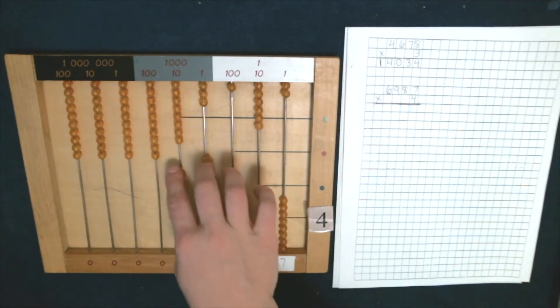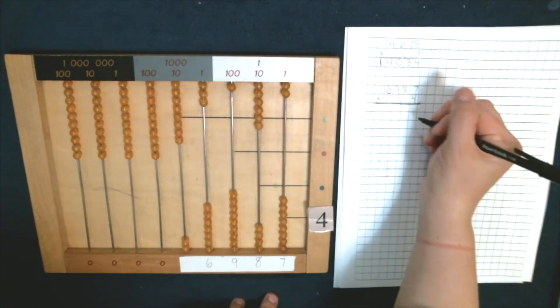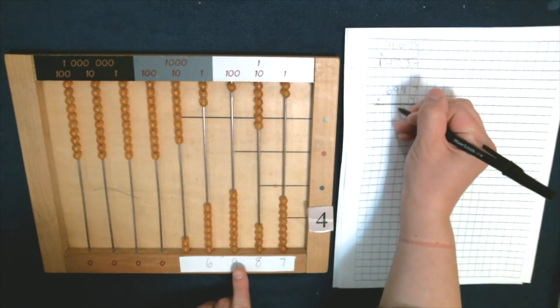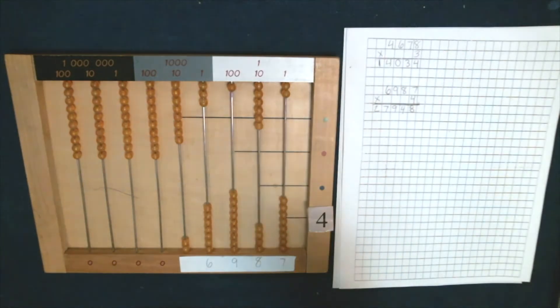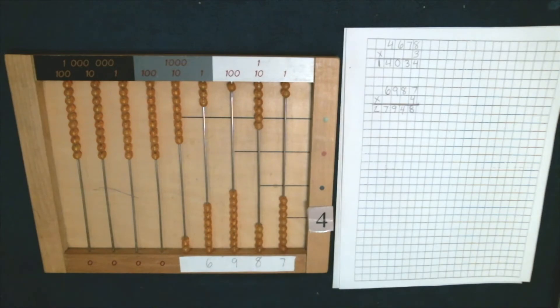And there, another answer. So we have eight units, four tens, nine hundreds, seven thousands, and two ten thousands. So we have 27,948. Good.